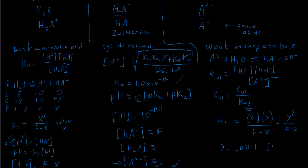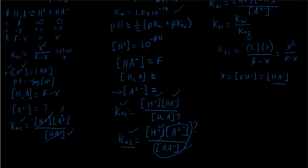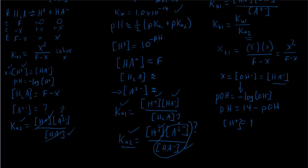In this weak base problem, X is the hydroxide ion concentration and also equals [HA⁻]. To find the pH, we calculate pOH = −log[OH⁻] = −log(X), then use pH + pOH = 14 at 25°C, so pH = 14 − pOH. Alternatively, [H⁺] = Kw / [OH⁻] = Kw / X.